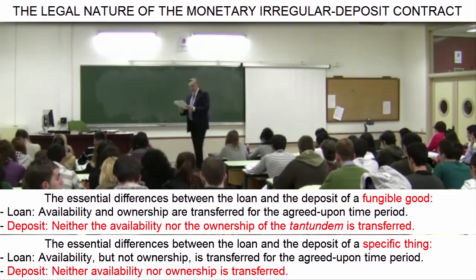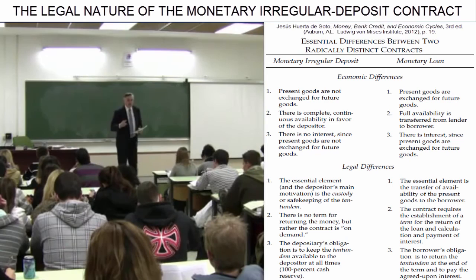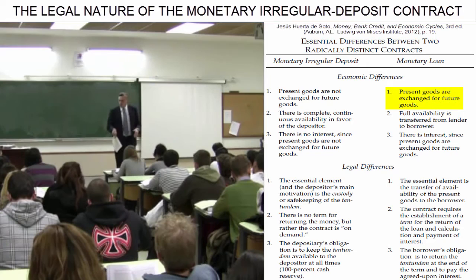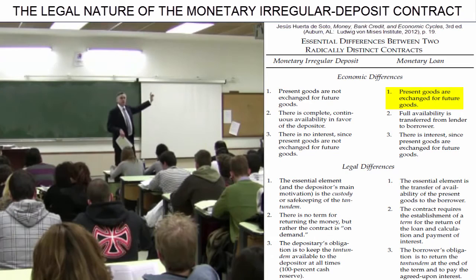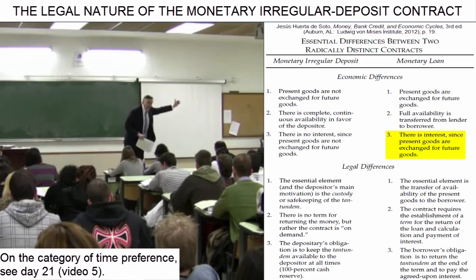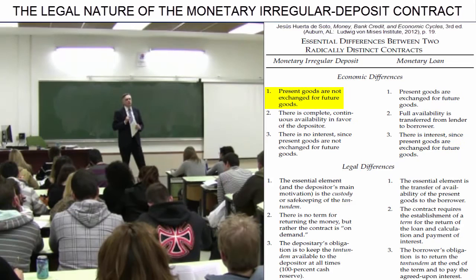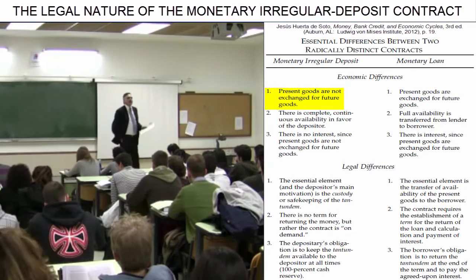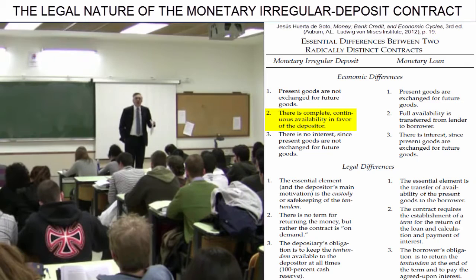Now let us consider the essential differences from the economic standpoint. In the case of the loan, there is an exchange of present goods for future goods. I give up the ownership of present goods in exchange for having them returned to me within a year, along with interest, according to the category of time preference. In contrast, in the deposit, there is no exchange of present goods for future goods — there is no credit transaction. The depositor maintains the full availability of his money as if, or even more than if, he had it in his own pocket.